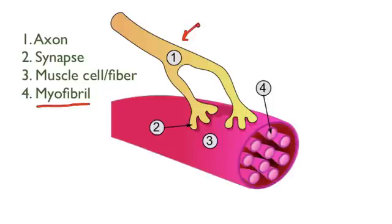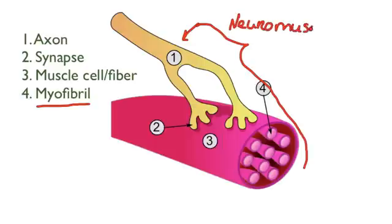So we have the muscle fiber or the muscle cell, which can be very long and very slender and narrow. We have the axon that's coming in making a synaptic connection with the muscle cell, and these little fibrils—myofibrils—inside of the muscle cell. This entire thing with the neuron, the motor neuron, and the muscle cell, is called a neuromuscular junction.